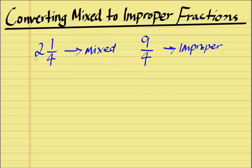First what we need to do is multiply the whole number part 2 by 4 which is 8 and then we add to that the numerator which is 1. 2×4 is 8 plus 1 is equal to 9 right here.